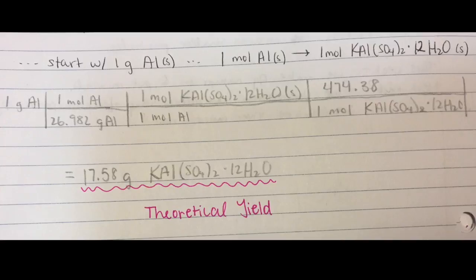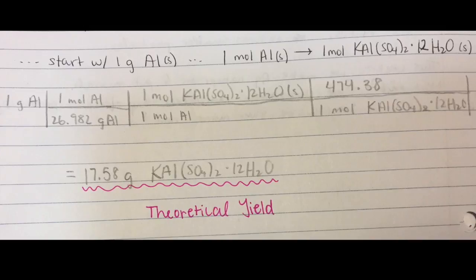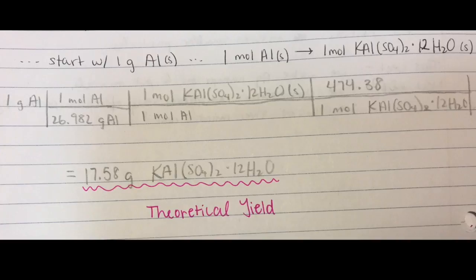We start with one gram of aluminum, then using the molar masses of aluminum and alum and the mole-to-mole ratio, which is one-to-one in this case, we get that the theoretical yield should be 17.58 grams of alum.